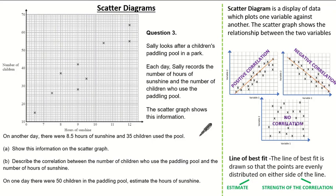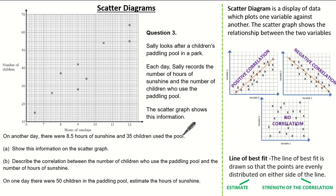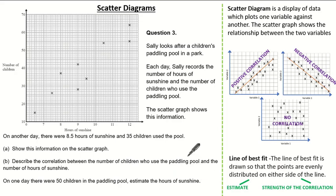Let's look at our last question. Sally looks after a children's paddling pool in a park. Each day, Sally records the number of hours of sunshine and the number of children who use the paddling pool — the scatter graph shows this information. On another day, there were 8.5 hours of sunshine and 35 children used the pool. We're asked to show this information on the scatter graph, describe the correlation between the number of children who use the paddling pool and the number of hours of sunshine, and on one day there were 50 children — estimate the number of hours of sunshine. See if you can give it a go and press pause if you need.